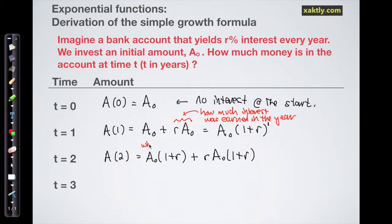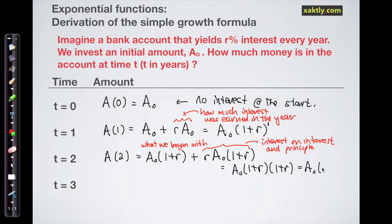We're taking interest not only on our principal amount, but on the interest that we earned last year. Now notice that each one of these terms has an A naught times one plus r factor in it. So I can take that factor out and see that that multiplies one plus r, which is just A naught times one plus r squared. So you can see why I put the one exponent on that last one plus r binomial.